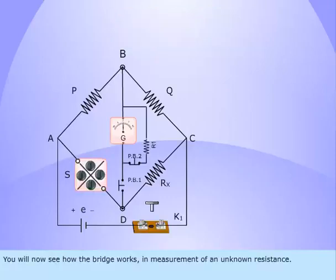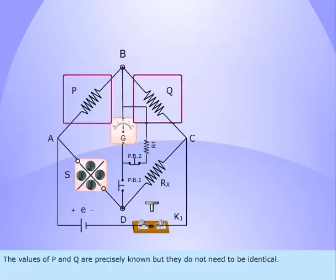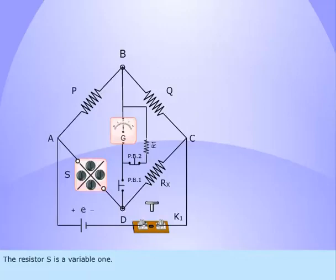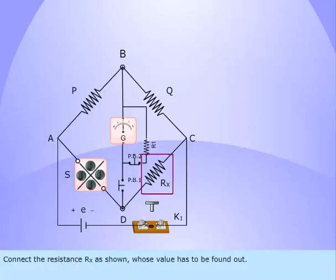You will now see how the bridge works in measurement of an unknown resistance. The values of P and Q are precisely known but they do not need to be identical. The resistor S is a variable one. Connect the resistance Rx as shown, whose value has to be found out.